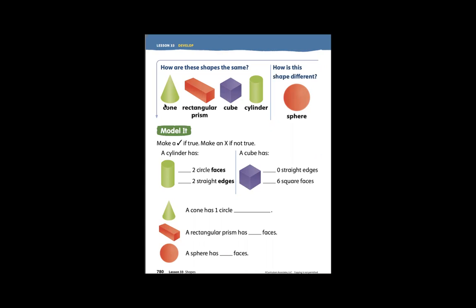Here we have a cone, a rectangular prism, a cube, and a cylinder. How is this shape different over here? It is a sphere.